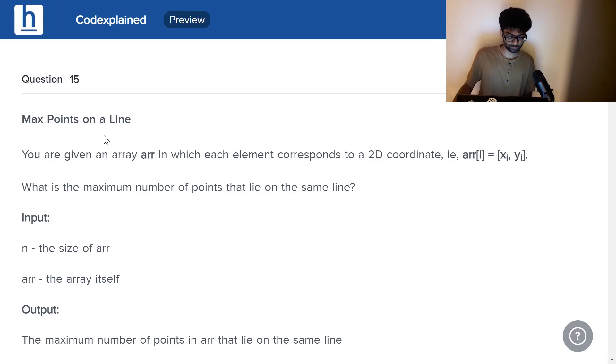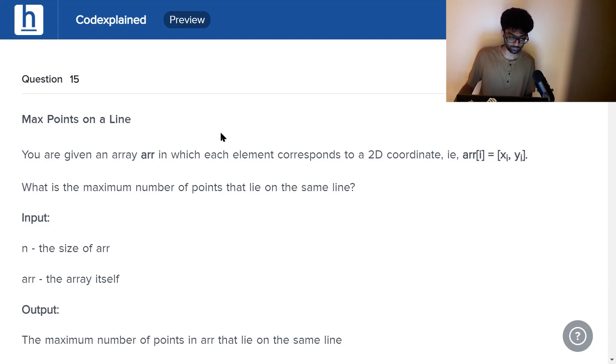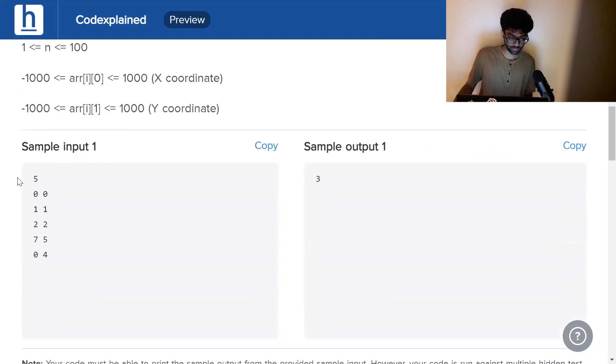Max points on a line. You are given an array ARR in which each element corresponds to a 2D coordinate or a point. That is ARR of i is xi, yi. What is the maximum number of points that lie on the same line?